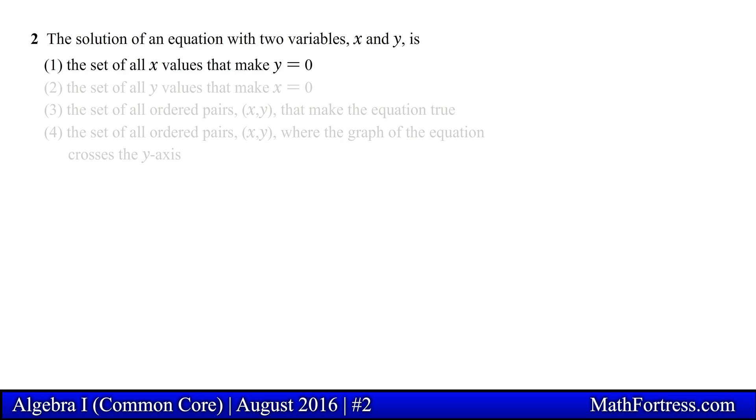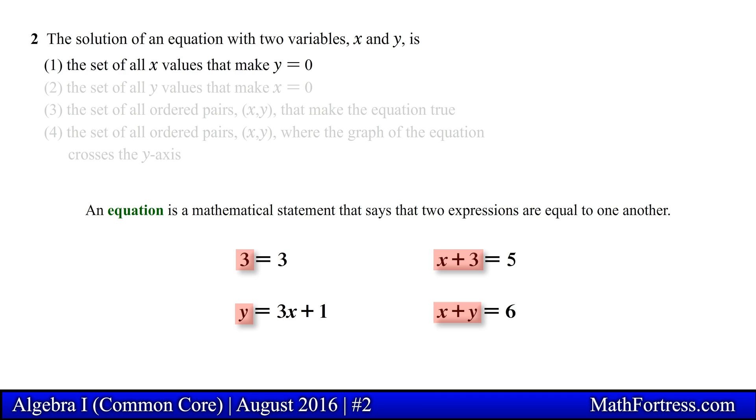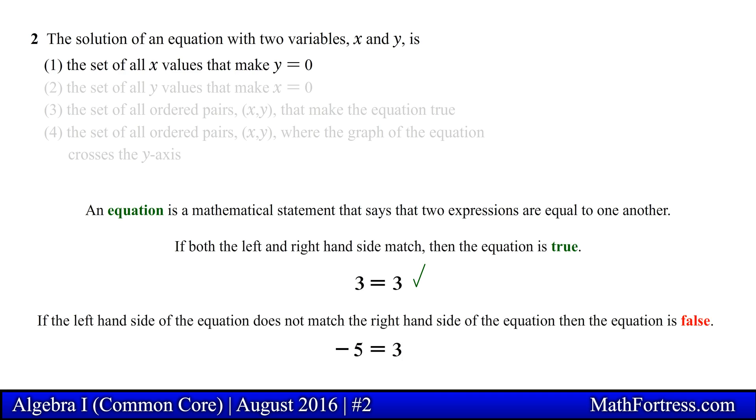Let's start with the first option, the set of all x values that make y equal to 0. Recall that an equation is a mathematical statement that says that two expressions are equal to one another. When determining if two expressions are equal to one another we check to make sure that the left hand side of the equation is equal to the right hand side of the equation. If both sides match then the equation is true, if they don't match then the equation is false.